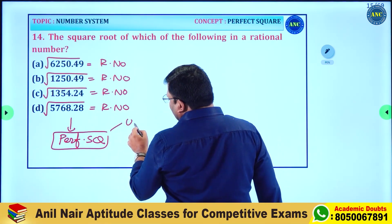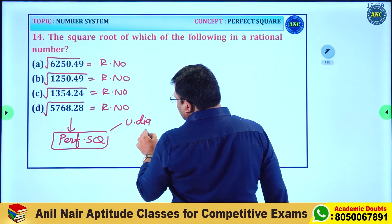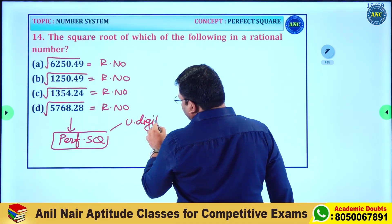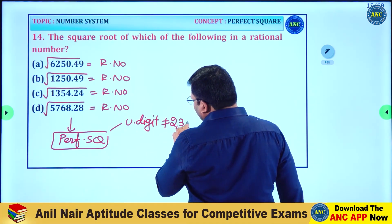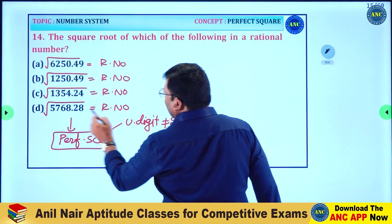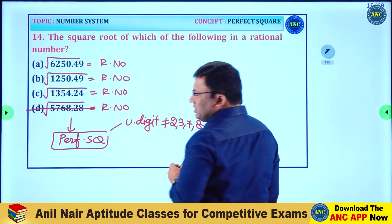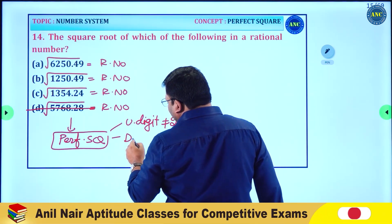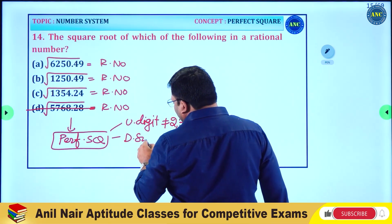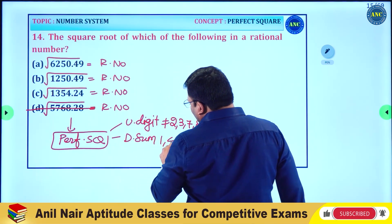What is the logic of a perfect square? The unit digit of a perfect square can never be 2, 3, 7, or 8. Based on this rule, option D is eliminated.